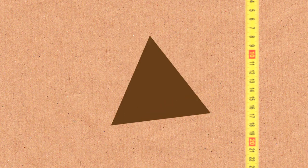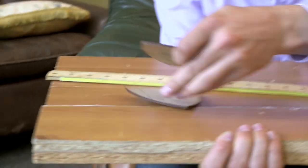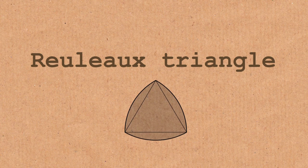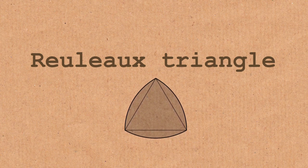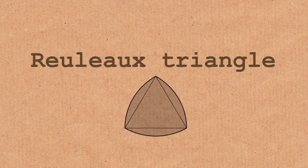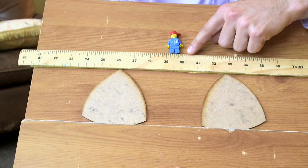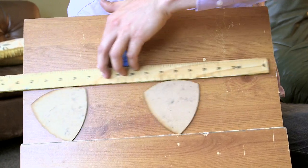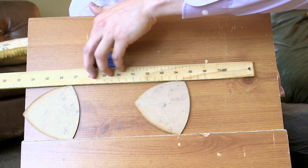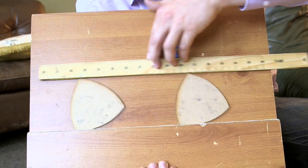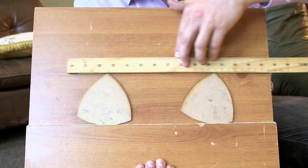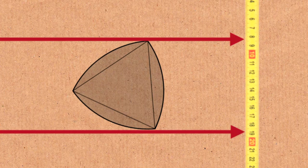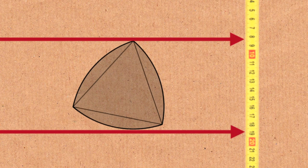Would it work with a triangle if we sort of rounded the faces a little bit? Well, let's try that. So these are called Reuleaux triangles — I might not be pronouncing that right, someone correct me in the comments. So they're not circles, but they're the same height all the way around, the same width all the way around, no matter how you turn these shapes, even though they're not circles. When I first saw that, that kind of blew my mind a little bit.